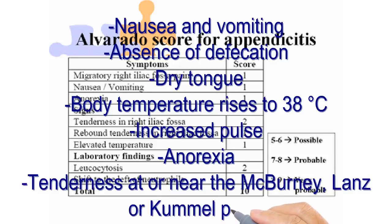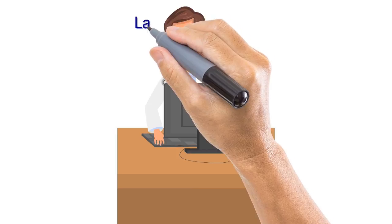Palpation is the main physical exam. Tenderness is often maximal at or near the McBurney, Lenz, or Kümmell points. Muscular resistance to palpation of the abdominal wall parallels the severity of the inflammatory process. Early in the disease, resistance, if present, consists mainly of voluntary guarding. As peritoneal irritation progresses, muscle spasm increases and becomes largely involuntary — the true rigidity reflects contraction of the muscles directly beneath the inflamed parietal peritoneum. Muscular resistance is also associated with skin hyperesthesia. Rectal examination can find a swollen, fluctuating, painful-to-palpation mass.